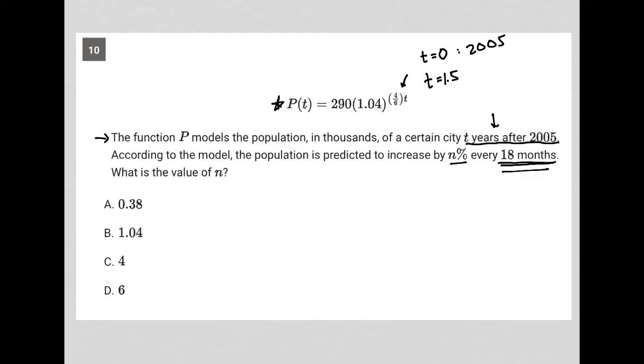When t equals zero, and I'll use a different color. When this is zero, that makes this whole thing zero. Any number to the zero power is just one. And we get 290, right? Which is why I like to use zero there. So basically, P(0) is equal to 290.